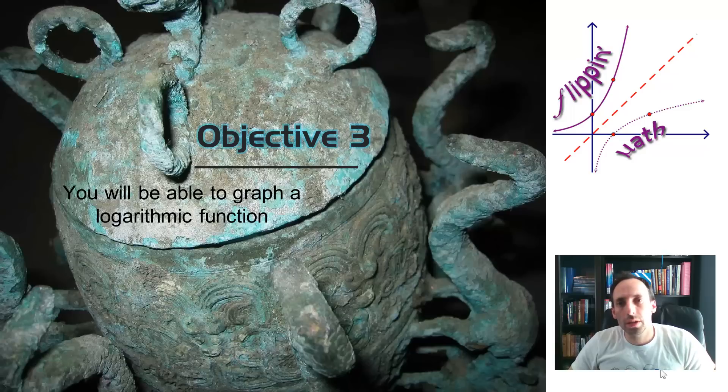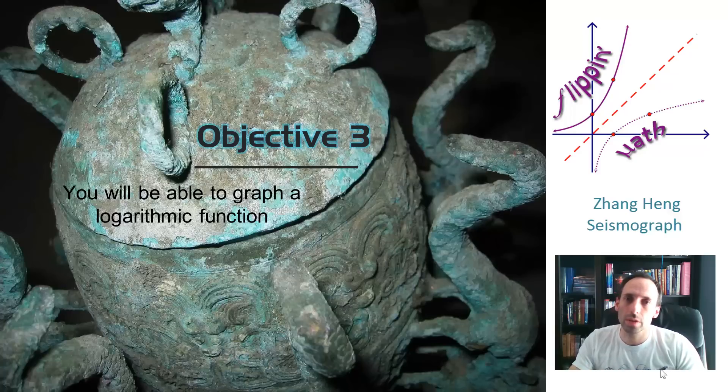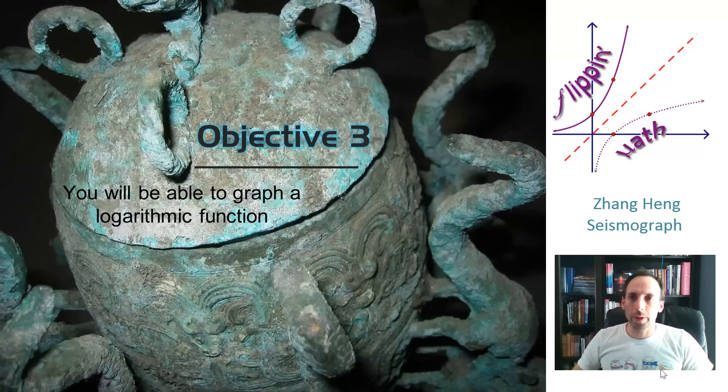What that is, is the first known seismograph. A seismograph measures the intensity of an earthquake. Earthquakes these days are measured on a logarithmic scale. The Richter scale that you hear about earthquakes is a logarithmic scale, so basically you're talking about exponents, powers of 10. This was the first known seismograph and it was Chinese and very old. It's a pretty cool-looking picture.